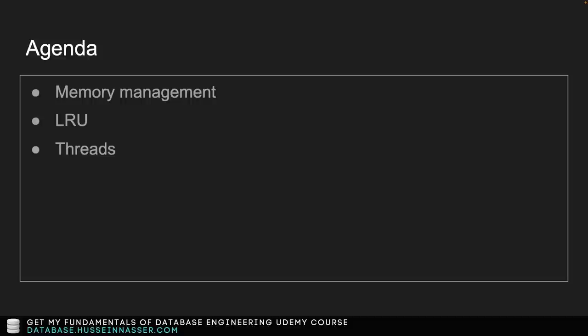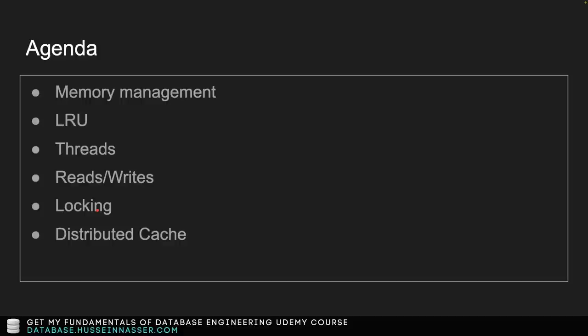We're going to talk about the threading model, because you need multiple threads to serve a lot of clients with many TCP connections for reading and writing. We'll go through read and write examples and look inside how Memcached works. The locking model — two people trying to write the same item — is not as advanced as ACID. It's a serialized model where we try to prevent two threads from reading or writing the same item simultaneously.